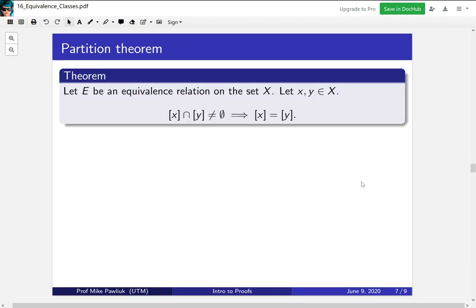So that brings us to an important theorem in this section. If you have an equivalence relation on a set X, and you have two equivalence classes that share an element, then they actually have to be the same. We'll see the proof of this in the next video.